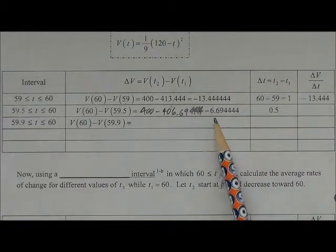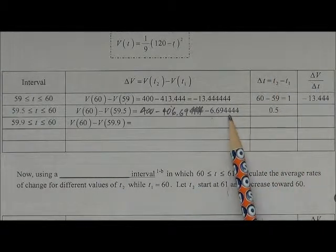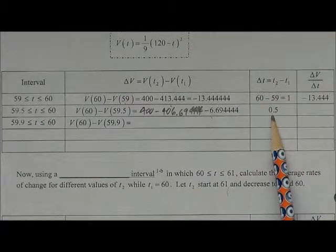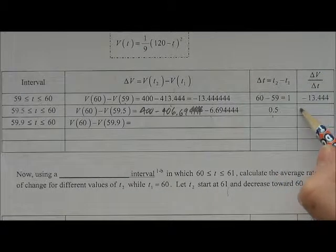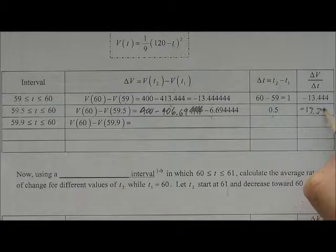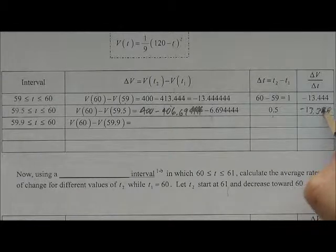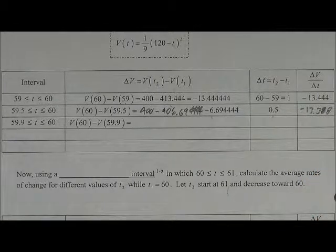So, when we divide negative 6.694444 by .5, we end up getting negative 13.388.